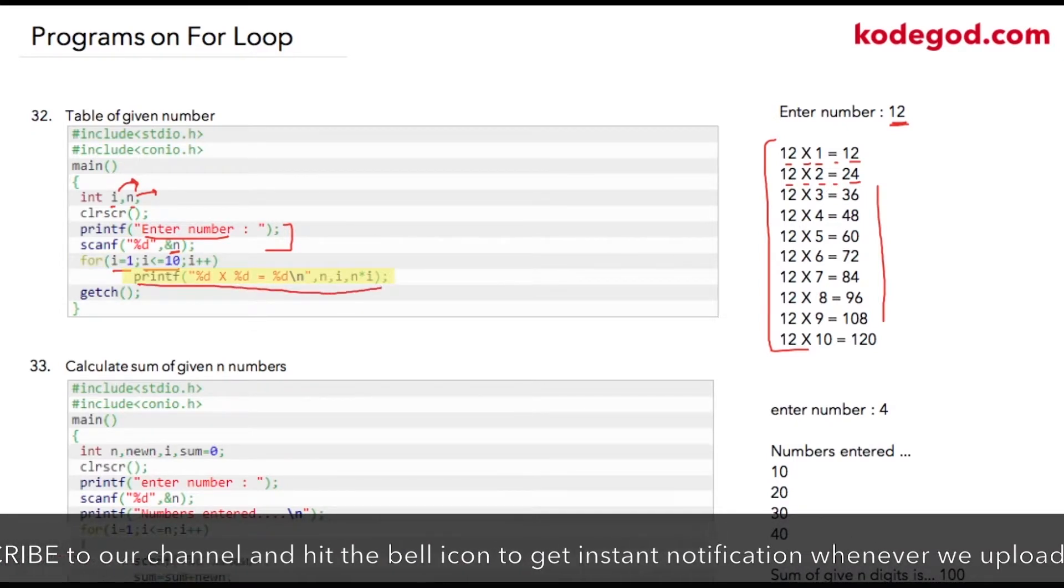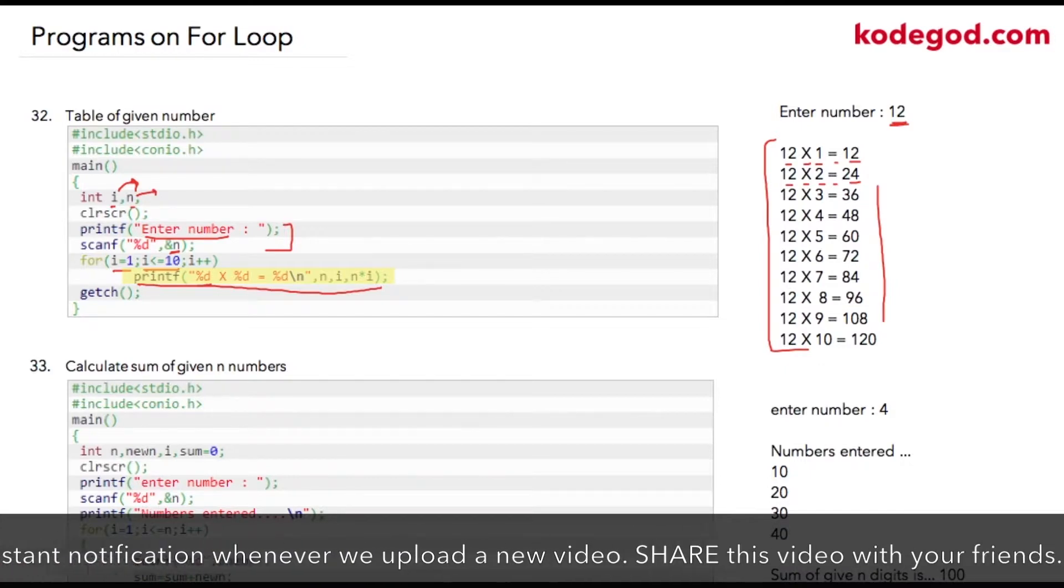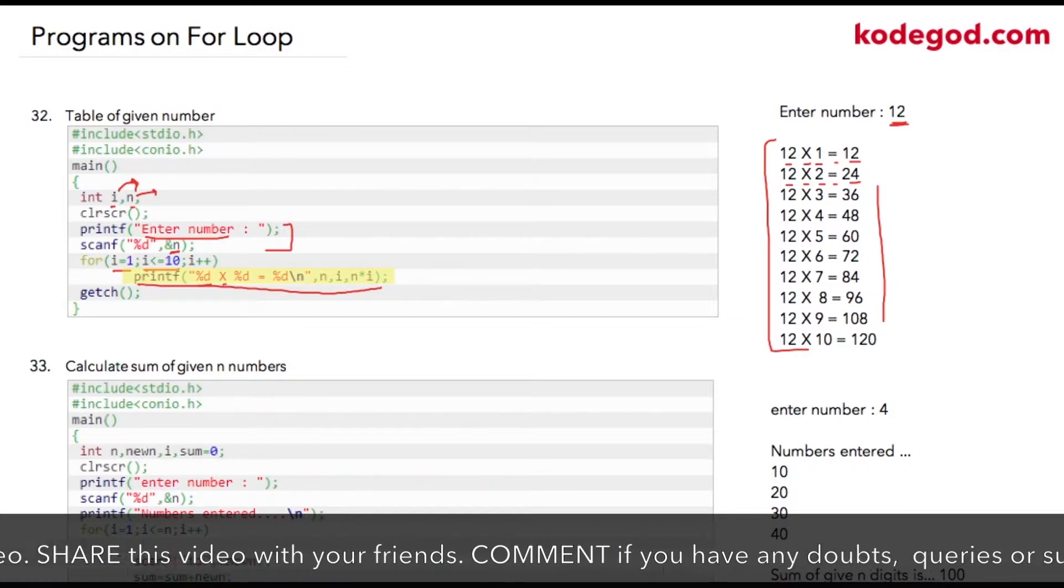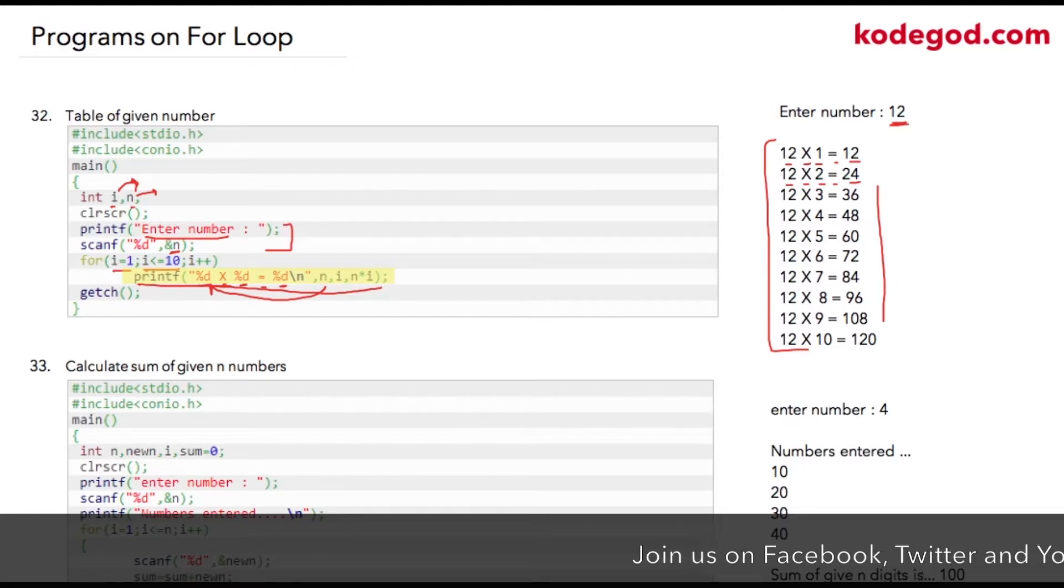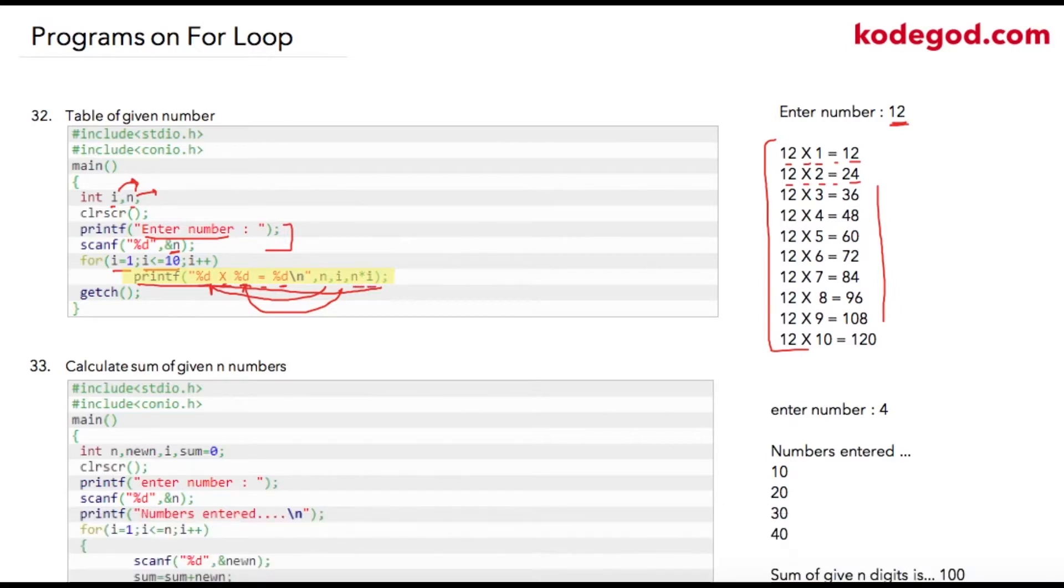I am writing %d, this is x to denote multiplication, again a %d, equals %d. The first %d will be replaced by the user's number, which is 12 in this case, and then I am writing the value of i, which is the iteration count. After that, I am simply writing n multiplied by i, so every time I am multiplying the user's number by my iteration, which will be starting from 1, 2, 3, 4, and so on. Notice that n multiplied by i is an inline operation we are performing.